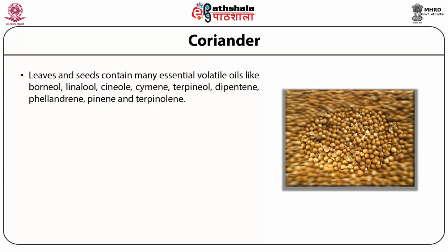Coriander: Leaves and seeds contain several essential volatile oils like borneol, linalool, cineol, cymene, terpineol, dipentene, phellandrene, pinene, and terpineol. In addition to this, they are also rich in varied antioxidant polyphenol flavonoids like quercetin, kaempferol, rhamnetin, and apigenin.